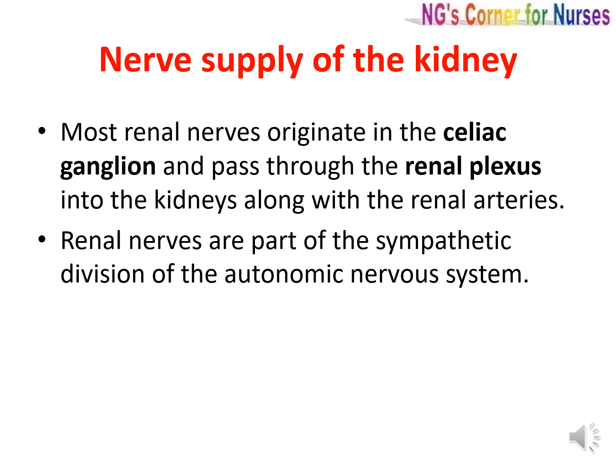Coming to the nerve supply of the kidney — most renal nerves originate in the celiac ganglion and pass through the renal plexus into the kidneys along with the renal arteries. The renal nerves are part of the sympathetic division of the autonomic nervous system.